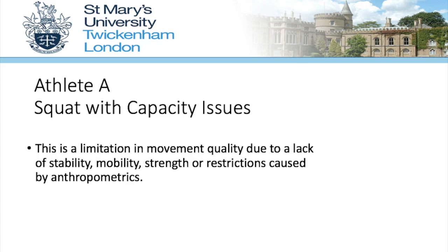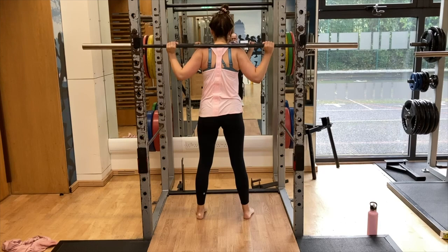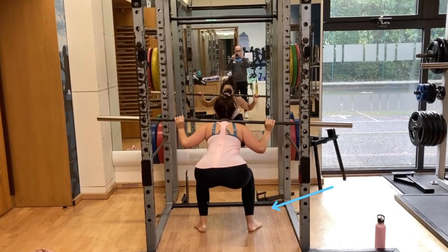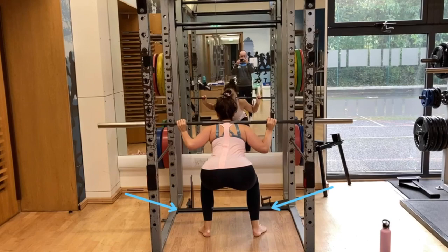Upon analysing the rear view of the squat, the athlete adopts a stance where their centre of mass is shifted to the left hand side. Starting from the ground up, we notice that the athlete starts with a greater external rotation of the right foot in comparison to the left. As the athlete descends into the bottom of the squat we see pronation of both feet, and this could be due to the lack of ankle dorsiflexion.